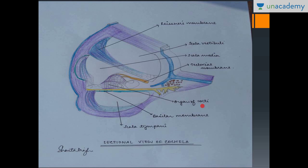The organ of Corti is an organ of hearing present in the cochlea. I will talk more about it in the next lesson. That's it for this lesson — thank you for watching.